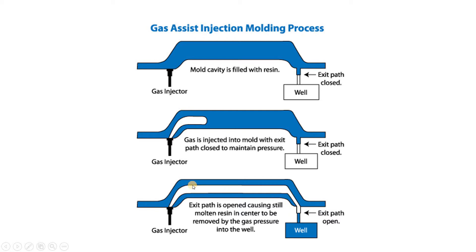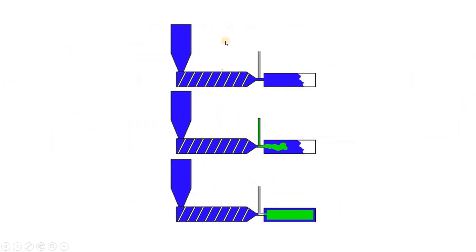Once the required pressure has been maintained through the inert gas like nitrogen, we open the exit path and can see the required structure formed. A high pressure is generated near the wall, which provides a lot of advantages. Here you can see the material in blue, and the inert gas — nitrogen — shown in green. Once the mold is filled, we apply full pressure by nitrogen gas over the wall.